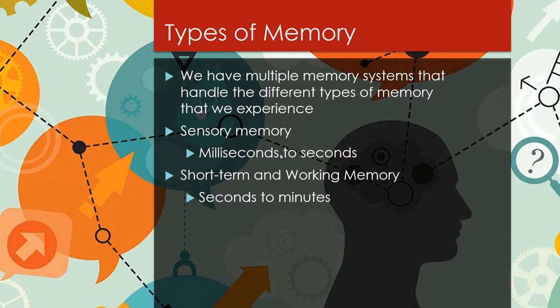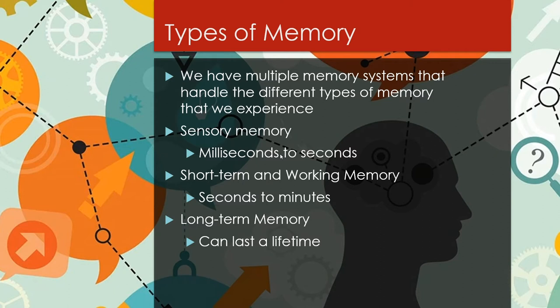Short-term memory is just the idea that we have something that just happened and we're keeping it online to figure out how important it is. Working memory refers to the fact that while we're keeping something online, we can actually manipulate it — you can memorize five different numbers and do mathematical operations on them. Once we get past short-term memory, we get into long-term memory, which can last an entire lifetime. The brain is encased in a dark skull and all it gets are neural impulses, yet somehow patterns of information within those neurons can hold something online your entire life.